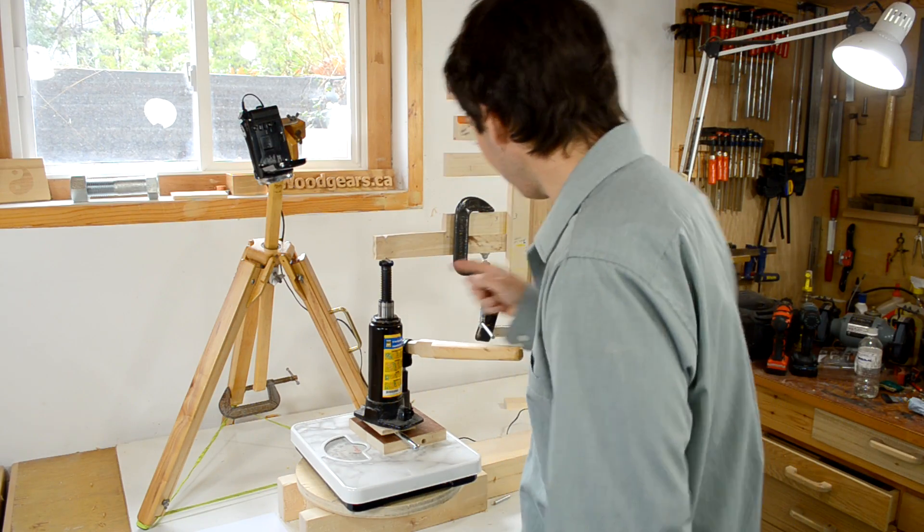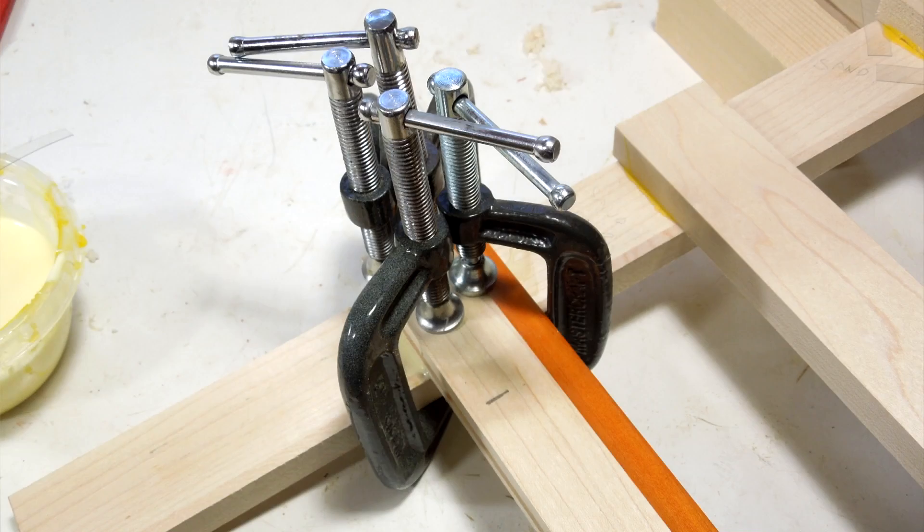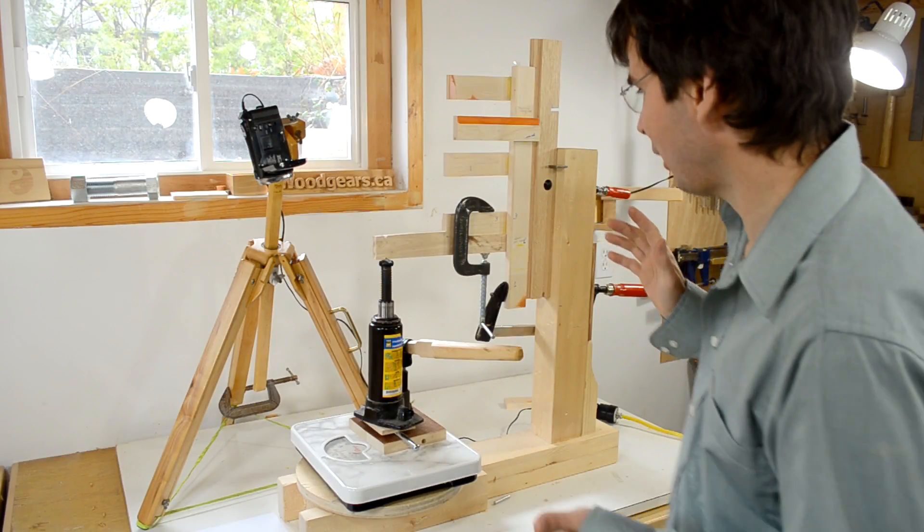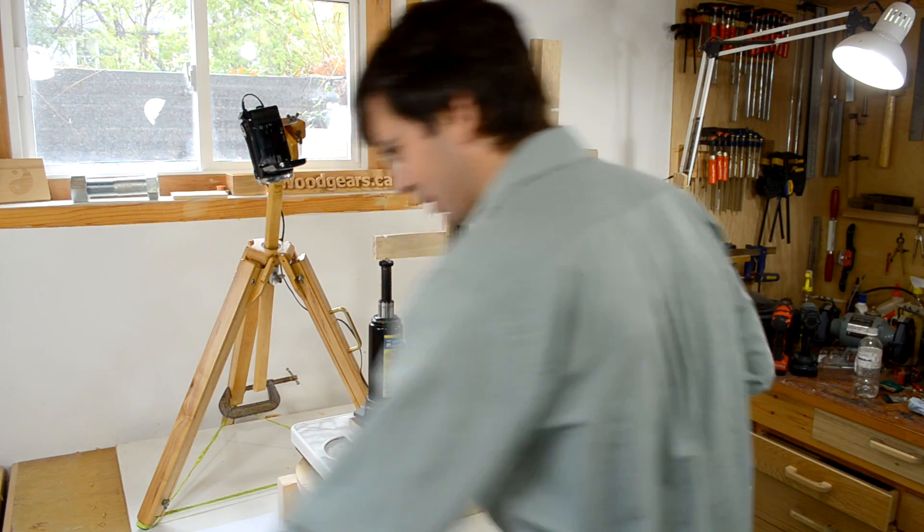So this is sample number three. This is the first one where I actually tried to squeeze all the glue out of it. And I also scraped the surface. Which could potentially make the glue not stick as well. So let's see how that one does.